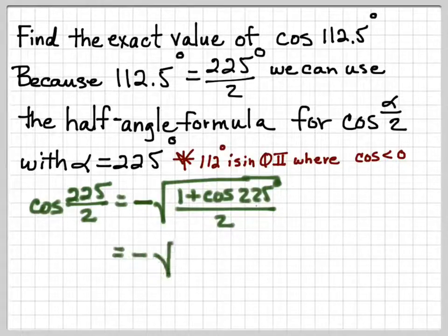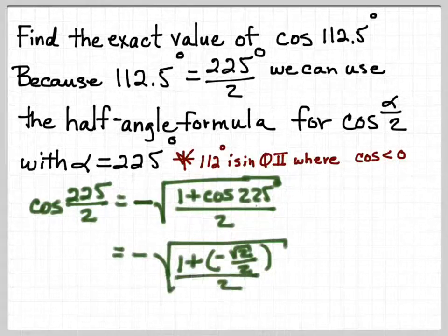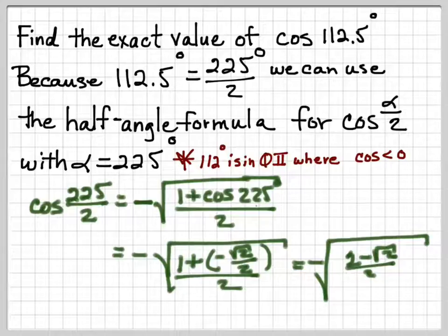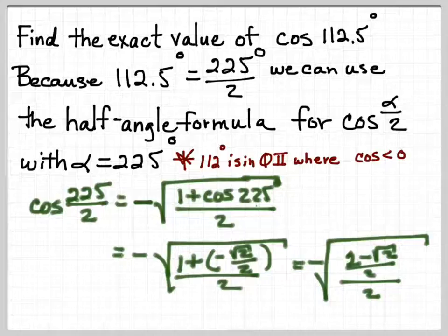Now, cosine of 225° is negative √2/2. So we have 1 plus (-√2/2), which equals (2 - √2)/2 for our numerator, divided by 2 for our denominator, giving us (2 - √2)/4.